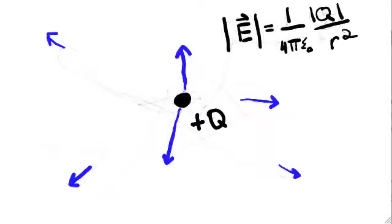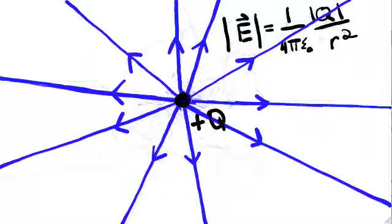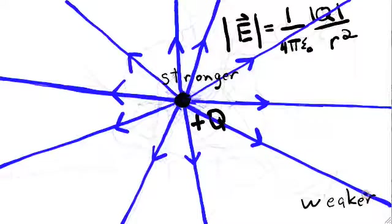Often we will represent the electric field by electric field lines, which are just the arrows connected to each other. We know that the electric field is strongest right next to the source charge, and this is represented in the picture by a higher density of field lines. Away from the charge, the field lines are less dense, and this is where the field is weaker.